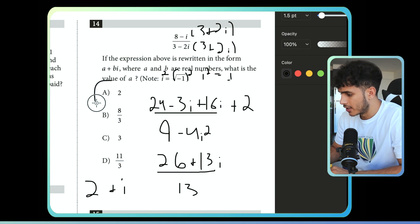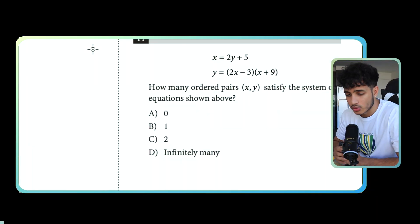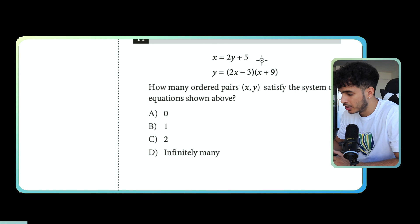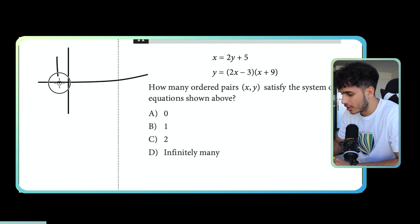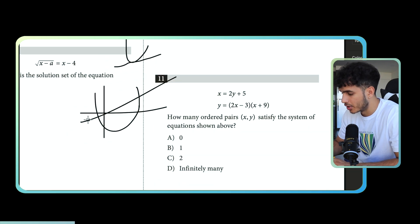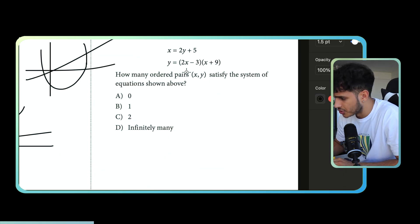So if you ask me what's the value of a, the answer is 2. Pretty simple question as long as you know how to get the conjugate. The next question we're going to do is finding how many ordered pairs satisfy the system of equations below — either linear or quadratic. In this case it's quadratic. The first thing we're going to do is set the y's equal to each other.